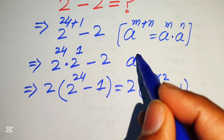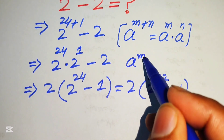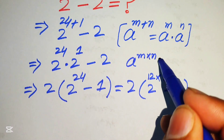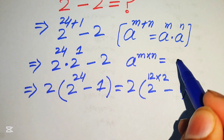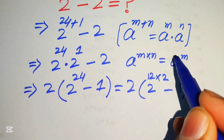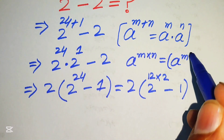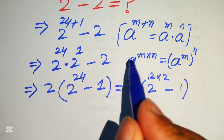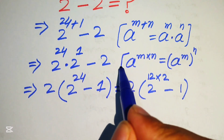We need another exponent law: if you have a to the power of m multiplied by n, it is equal to a to the power of m, with its exponent n — that is, (a^m)^n.